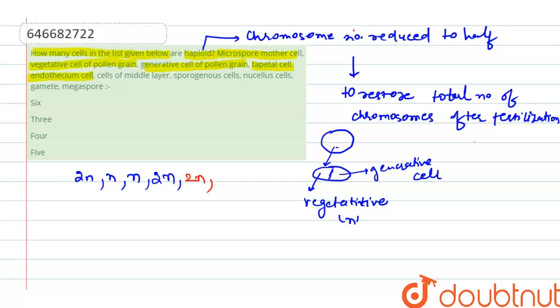which is cells of middle layer. These are also present in anther. Anther is diploid, so these cells also present in the middle layer will also be 2n.